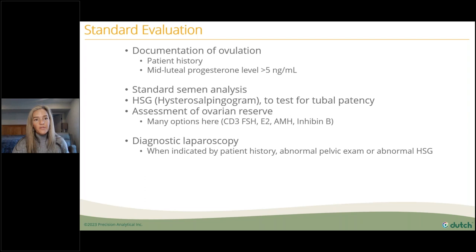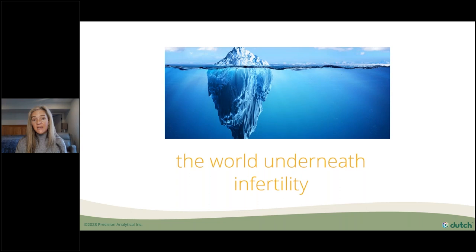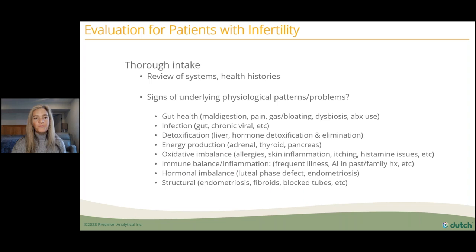Today I want to focus on the world underneath the standard workup, because the majority of infertility lies there. When evaluating patients, you need a thorough intake and review of systems from a broader functional medicine point of view. Look for signs of underlying physiological problems: issues of gut health such as maldigestion, gas, bloating, or antibiotic use history; signs of chronic infections; trouble with detoxification or energy production including stress, adrenal and HPA axis function, thyroid, and blood sugar.